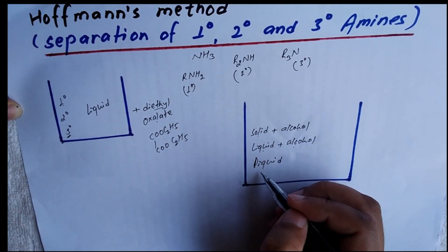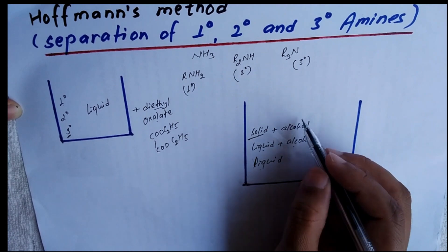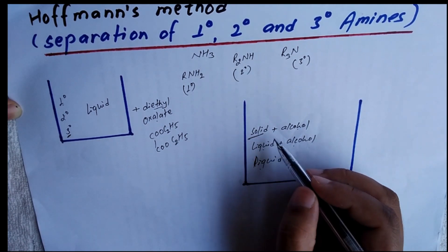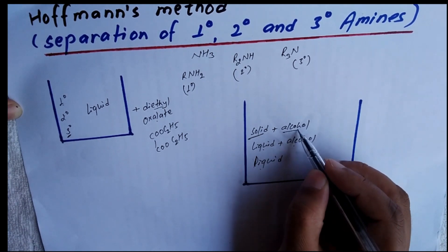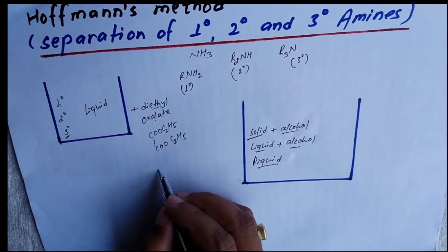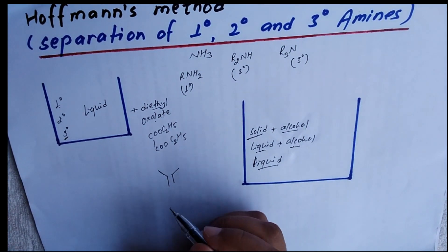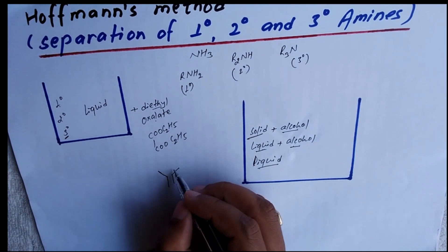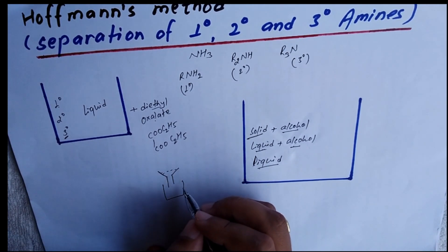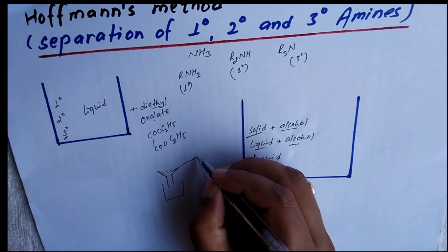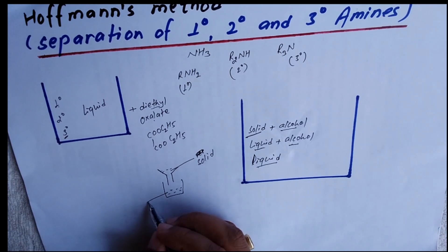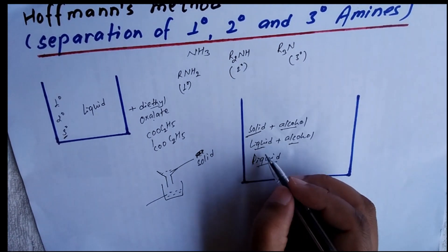The tertiary amine does not react with diethyl oxalate, so it remains as a liquid. So we have: solid plus alcohol from primary amine, liquid plus alcohol from secondary amine, and liquid from tertiary amine. This solid is now separated by filtration, and the remaining components are all liquids. After filtration, the solid is the residue, and in the filtrate there is alcohol, liquid dialkyl oxamic ester, and tertiary amine.